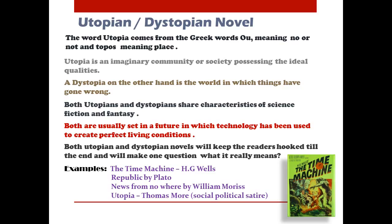Both utopian and dystopian novels are usually set in the future where technology has been used to create perfect or imperfect living conditions, based on technology and a future setting. These novels keep readers hooked till the end, making them question whether such a world is possible. Examples of utopian novels include The Time Machine by H.G. Wells, The Republic by Plato, News from Nowhere by William Morris, and Utopia by Thomas More.